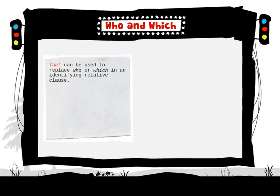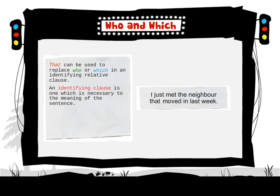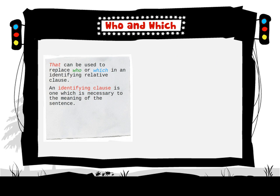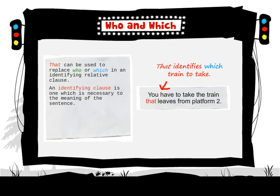That can be used to replace who or which in an identifying relative clause. An identifying clause is one which is necessary to the meaning of the sentence. For example: 'I just met the neighbour that moved in last week.' The clause 'that moved in last week' identifies the neighbour and is necessary. You have to take the train that leaves from platform 2 — that identifies which train to take.